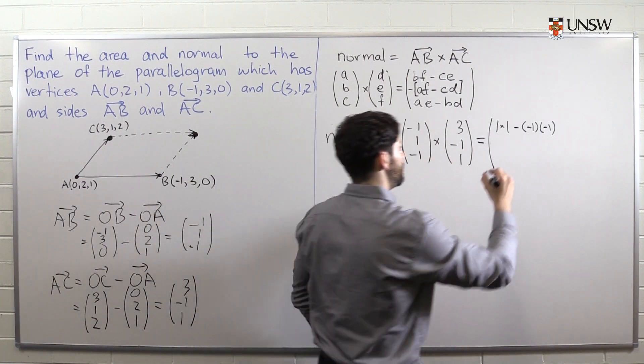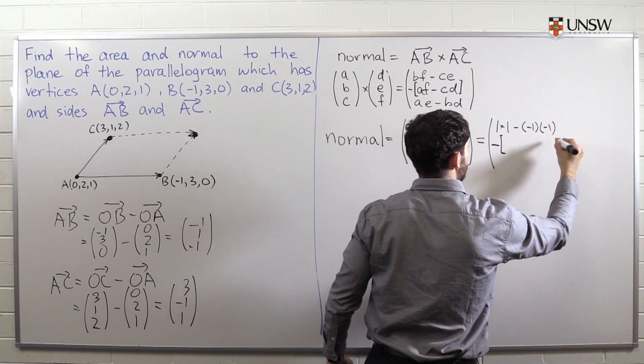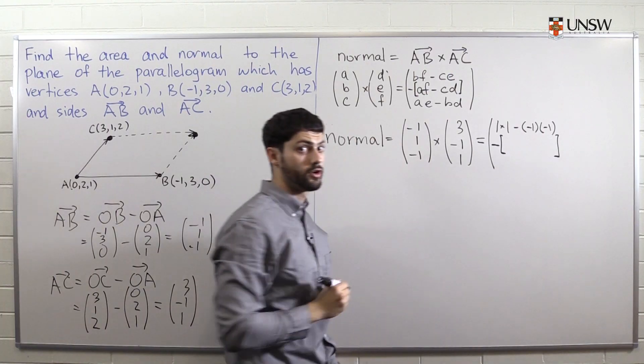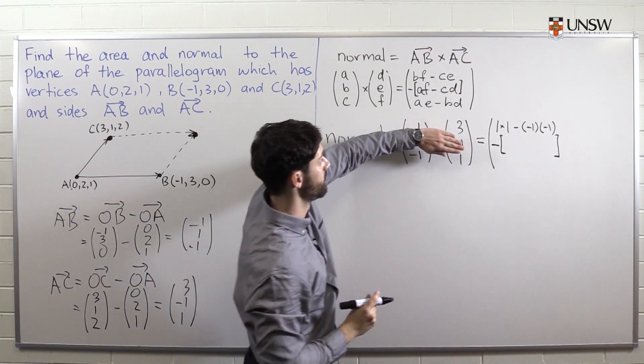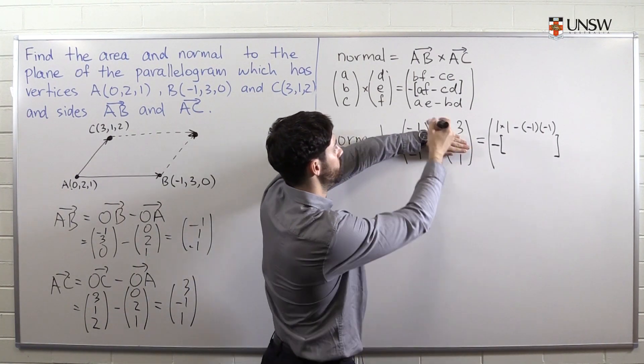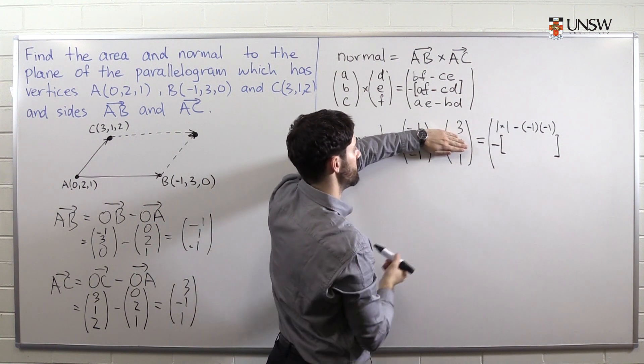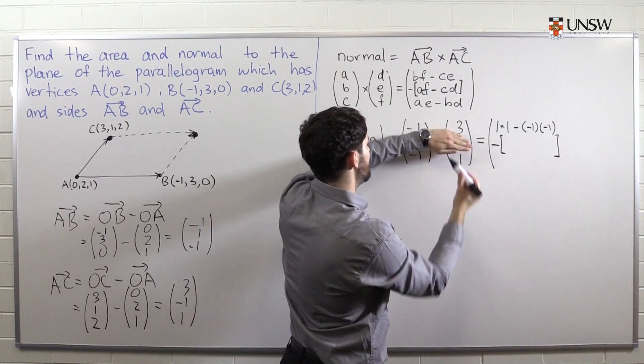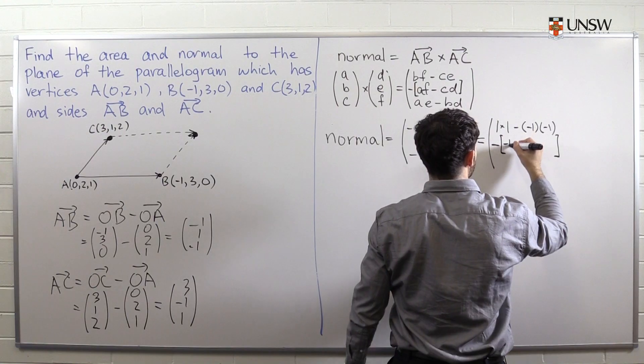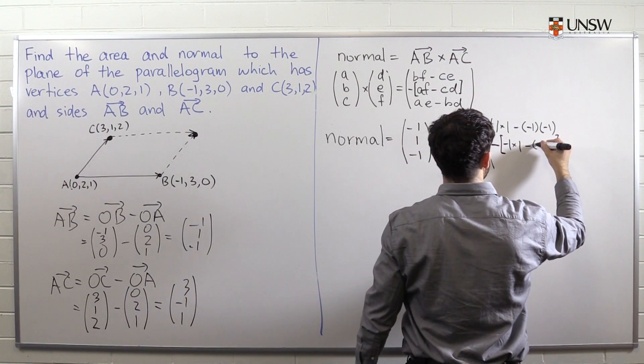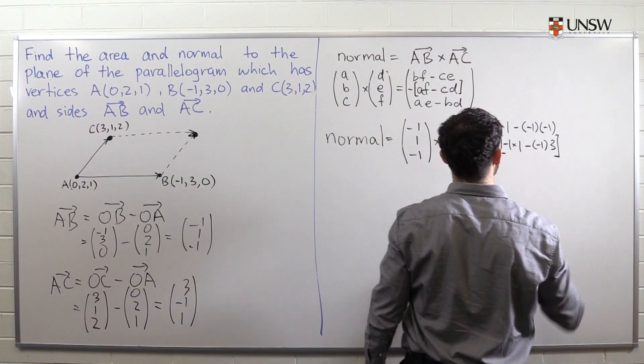For the second component, we put the minus sign straight away so we don't forget it. Because this is a common source of mistakes. We ignore the second row. We do minus one times one minus minus one times three.